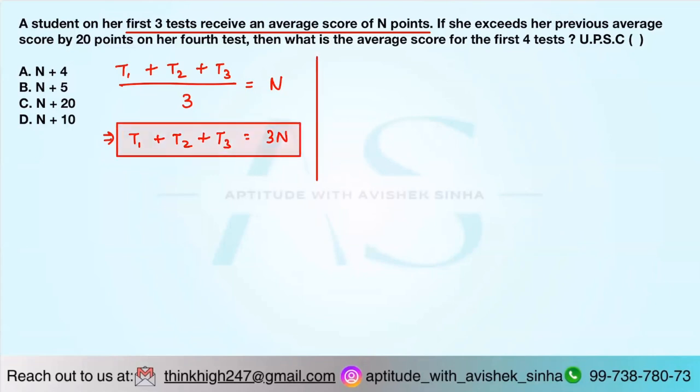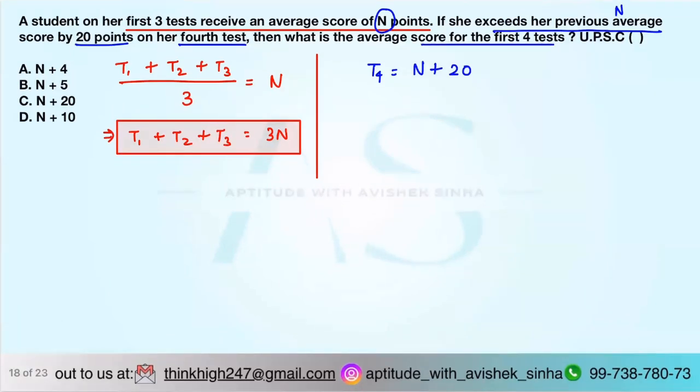If she exceeds her previous average, what is the previous average n, by 20 points on the fourth test? So T4 is actually n plus 20. What is the average score for the first four tests? So T1 plus T2 plus T3 plus T4 by 4 is the average.